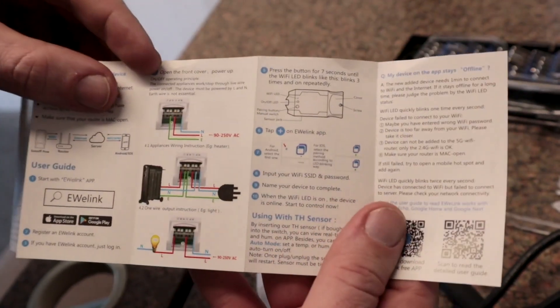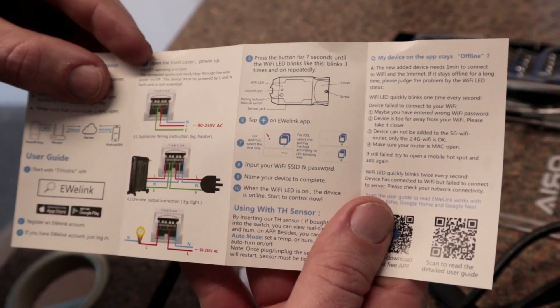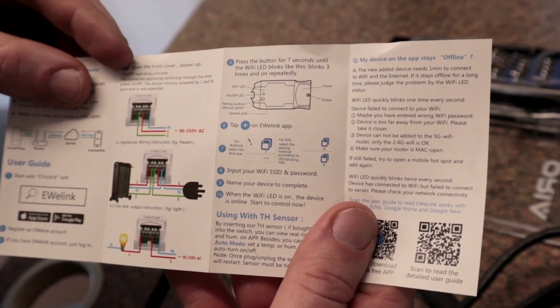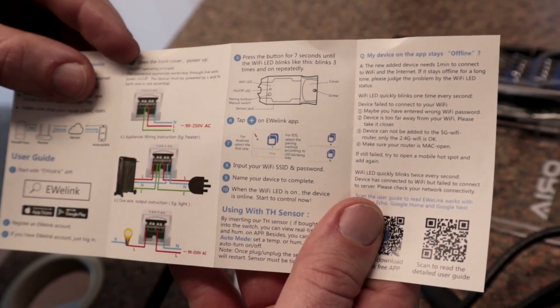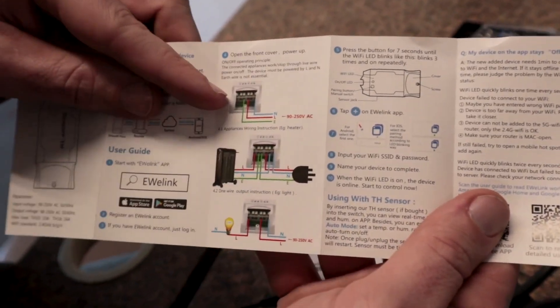So I'll show you what the instructions look like in this. Okay, this says, the connected appliance work stop through live wire. Power on, off. This device must be powered by L and N. Earth wire is not essential. Okay, so E is earth or ground.